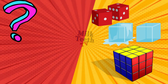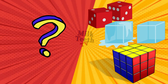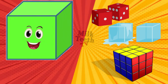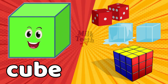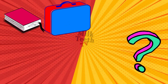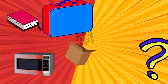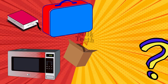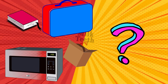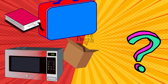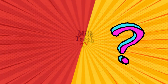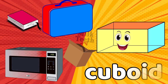A pair of dice, ice cubes, and the Rubik's Cube — they all have the same shape. That's a cube! A suitcase, a book, a carton, and the microwave — they all have the same shape. That's a cuboid!